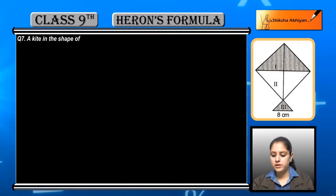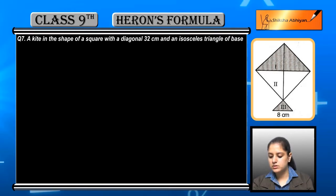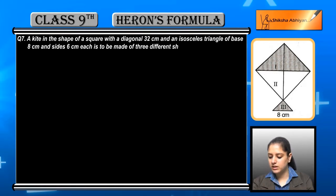A kite in the shape of a square with a diagonal 32 cm and an isosceles triangle of base 8 cm and sides 6 cm. Each is to be made of 3 different shades.